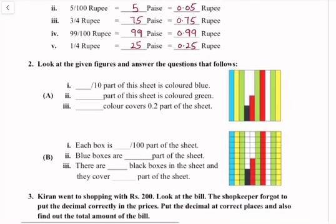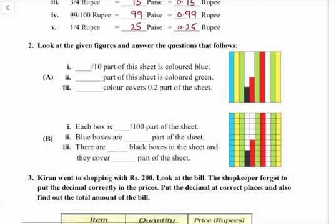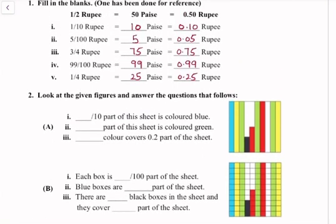Question number 2: Look at the given figures and answer the question that follows. First, one part is colored blue. So we have to find out how much part of the figure is colored blue. We count: 1, 2, 3, 4, 5, 6, 7, 8, 9, 10. So 1 by 10 part of this sheet is colored blue.